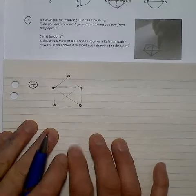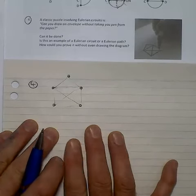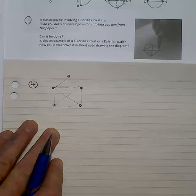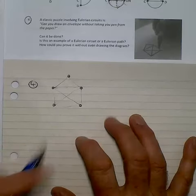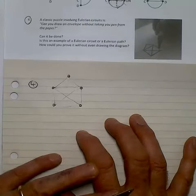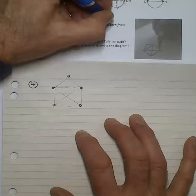Question 4 looks at a classic puzzle involving an Eulerian circuit or potentially an Eulerian circuit. Can you draw the shape of an old-fashioned envelope without taking your pen from the paper?